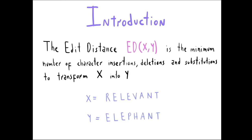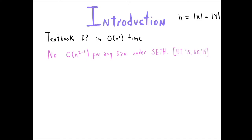The edit distance between strings x and y is the minimum number of character insertions, deletions, and substitutions needed to transform x into y. For example, if x is 'relevant' and y is 'elephant,' then the edit distance is 2 because we can remove 'r' from x and substitute 'v' into 'h.' The edit distance is a natural measure of similarity between strings and has many applications, for example in bioinformatics or more generally in text processing.